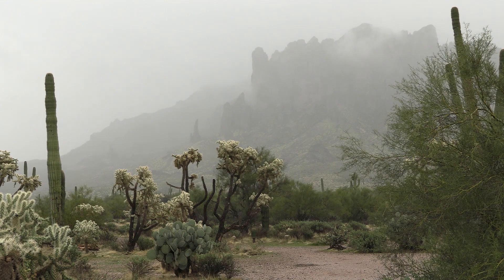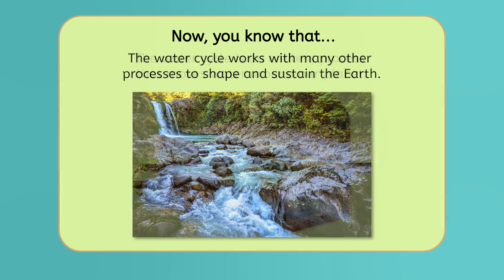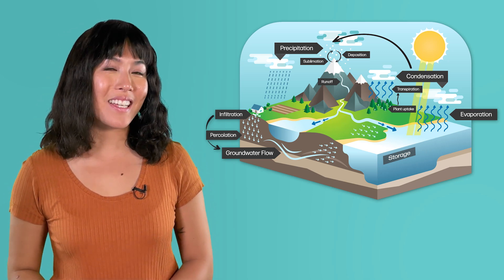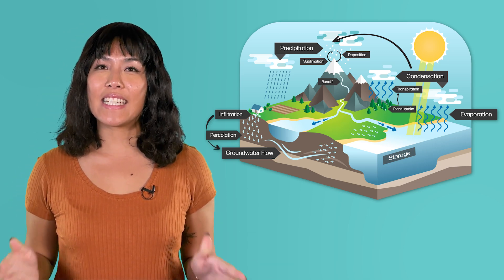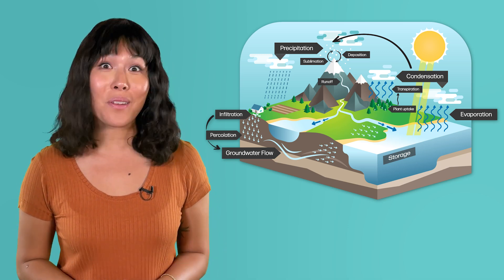So let's recap what we learned today. Now you know that the water cycle is an endless process that moves water around our planet, and that the water cycle works with many other processes to shape and sustain the Earth. Be sure to check out the practice questions and extension activities that go with this lesson to dive even deeper into the water cycle. And remember, in Earth Science, as in life, you rock! I'll see you next time!